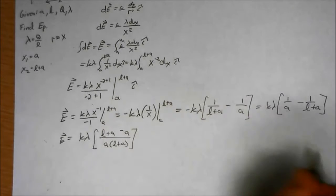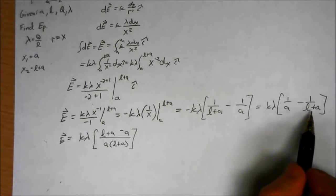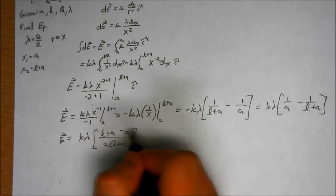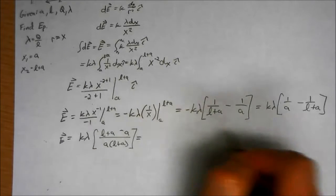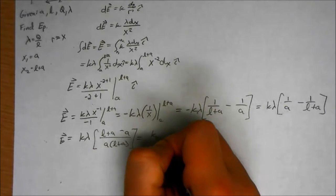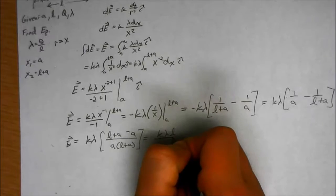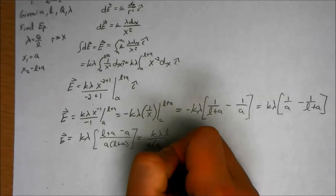You see, I gave them the same denominator, A times L plus A. So these two A's go away. So it equals K lambda L over A times L plus A.